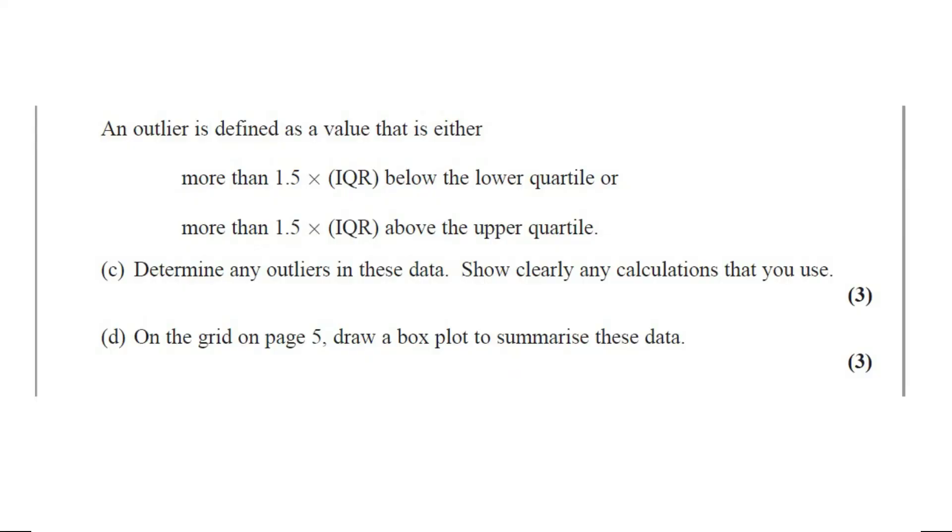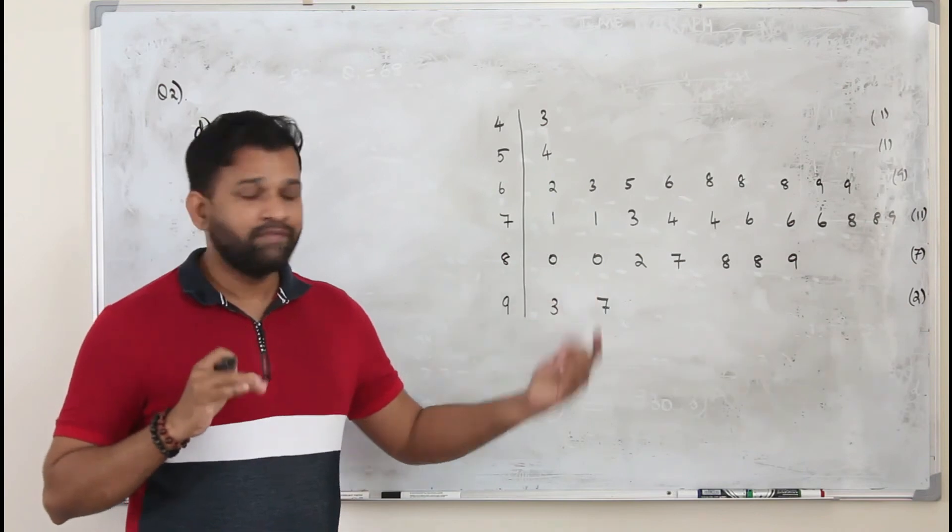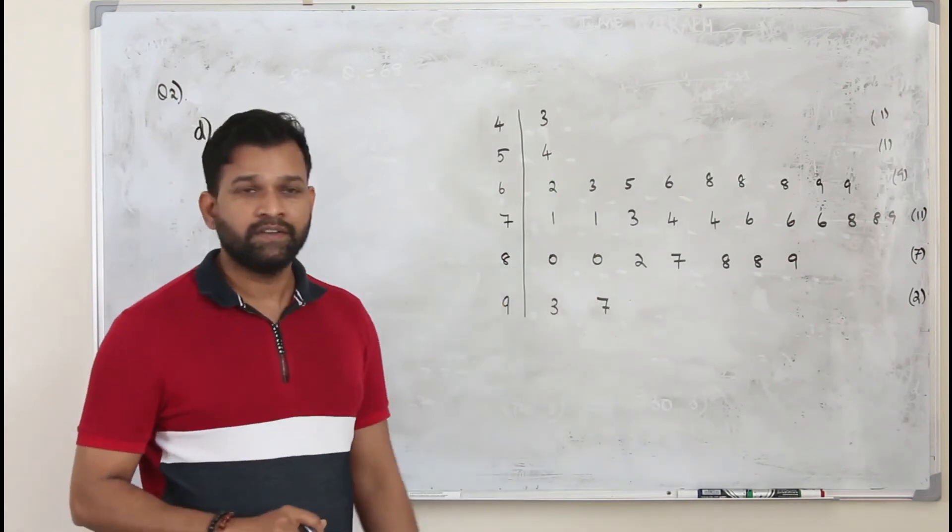Part D: Draw a box plot to summarize these data. This question got three marks. Here they want you to draw box and whisker plot using the set of values.